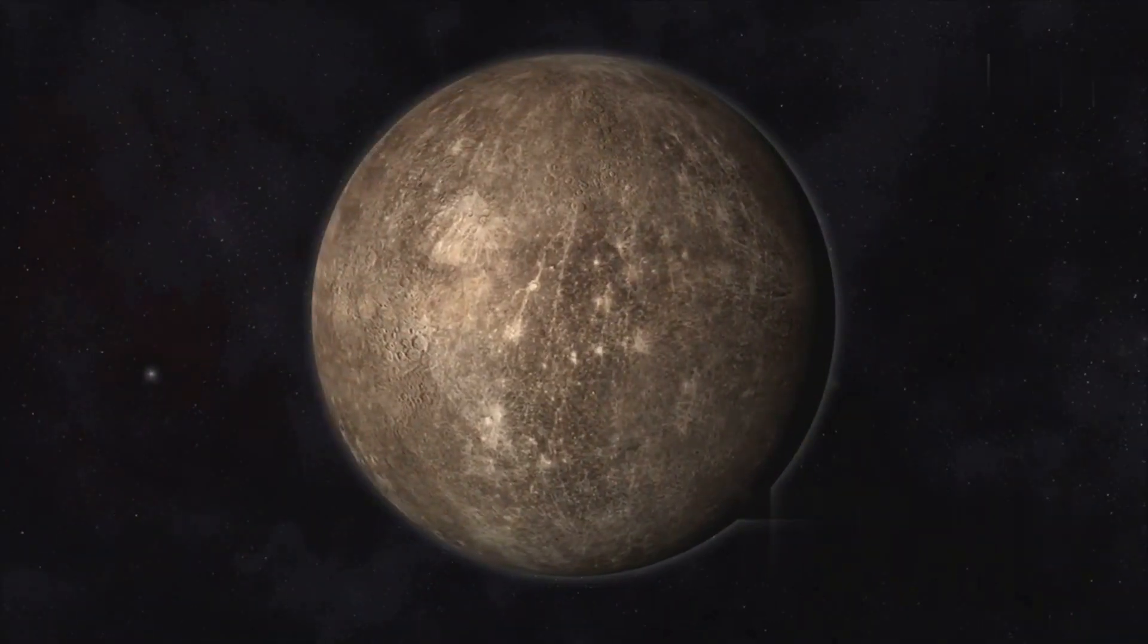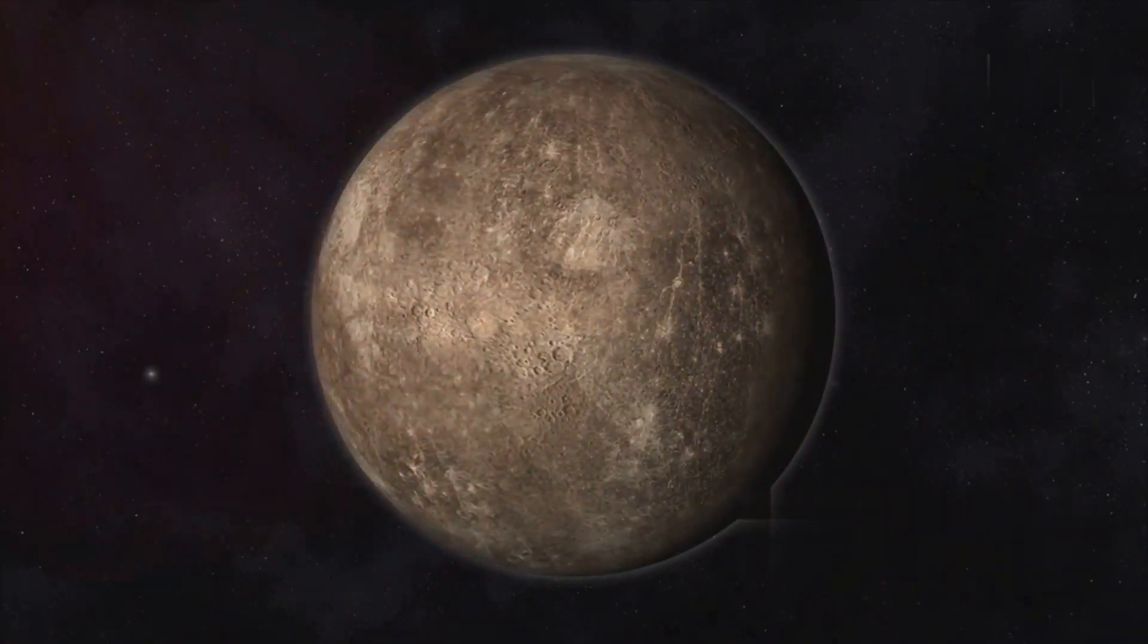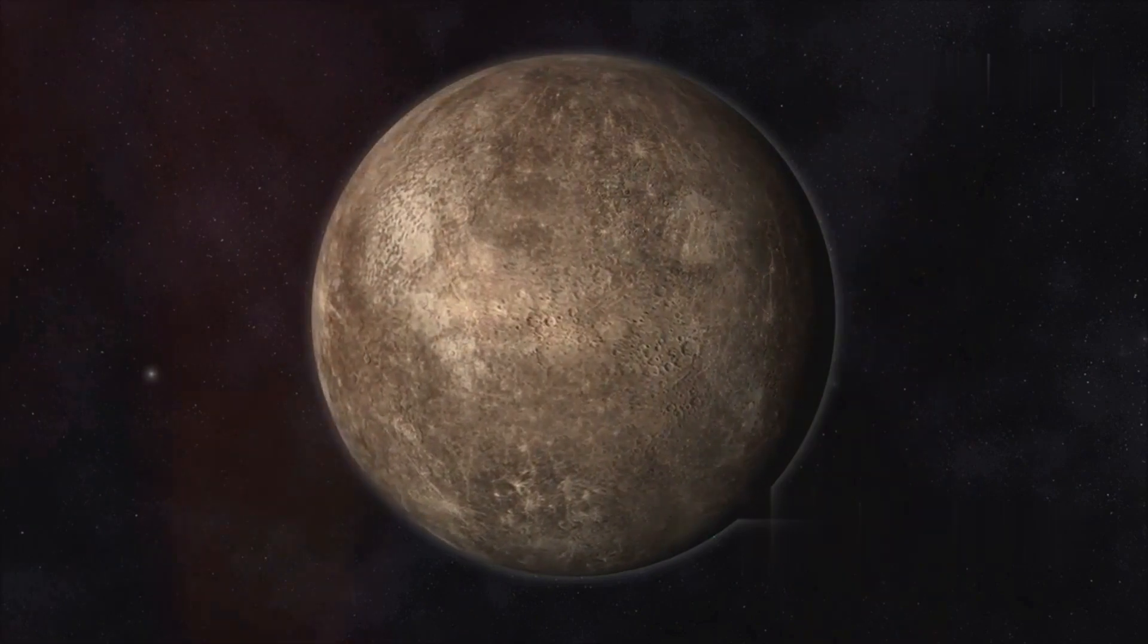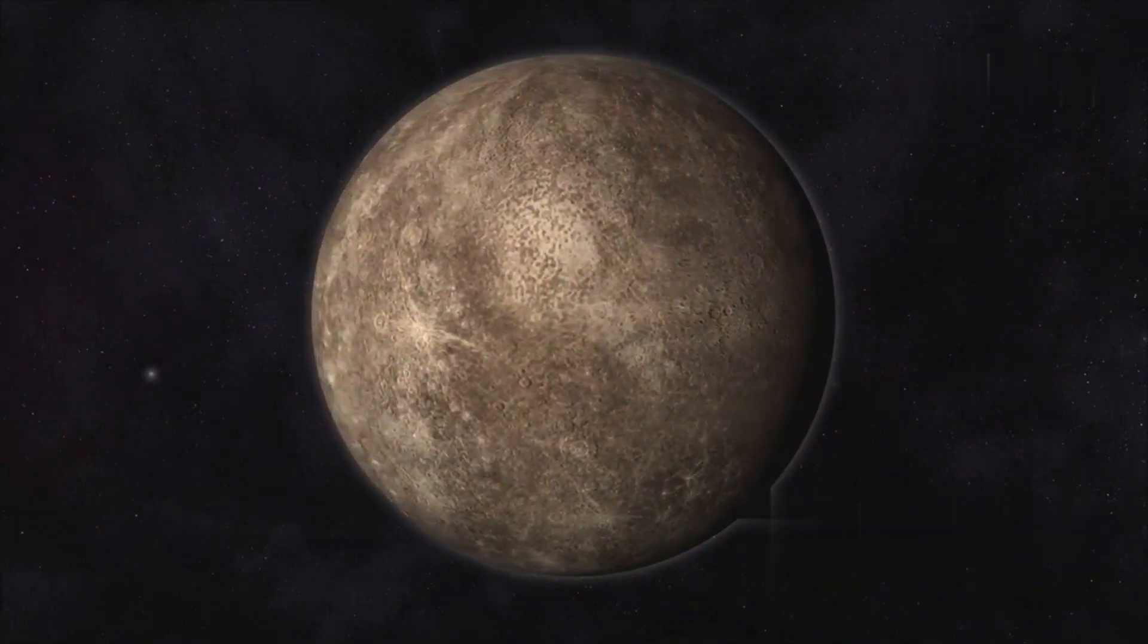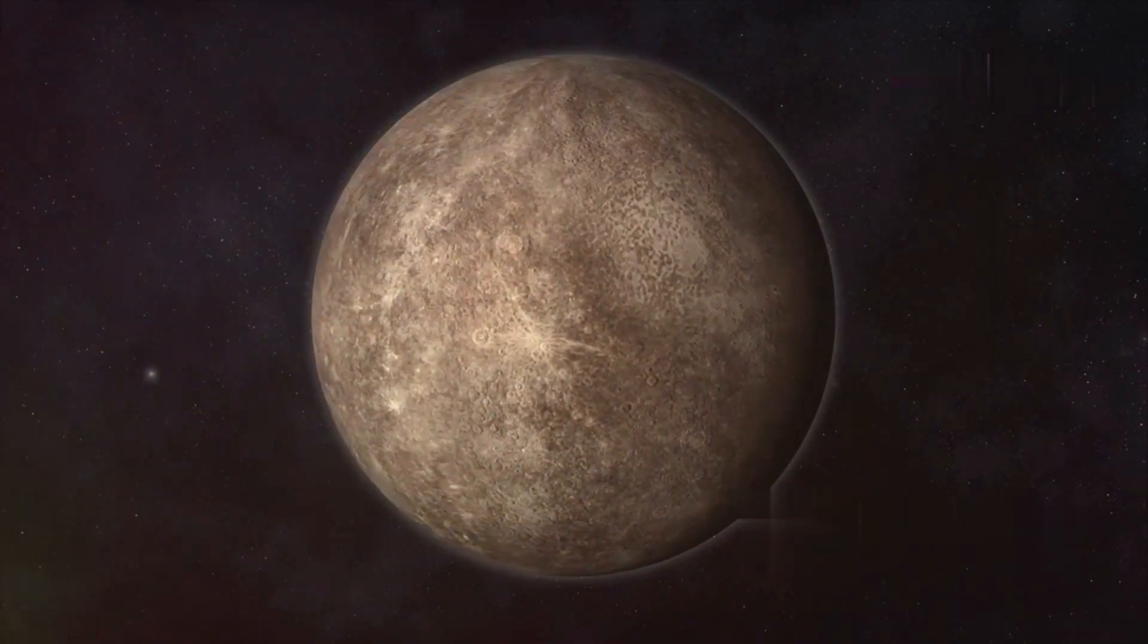Closest to the sun are the rocky planets: Mercury, Venus, Earth and Mars. These terrestrial planets have solid, rocky surfaces and are relatively small in size.